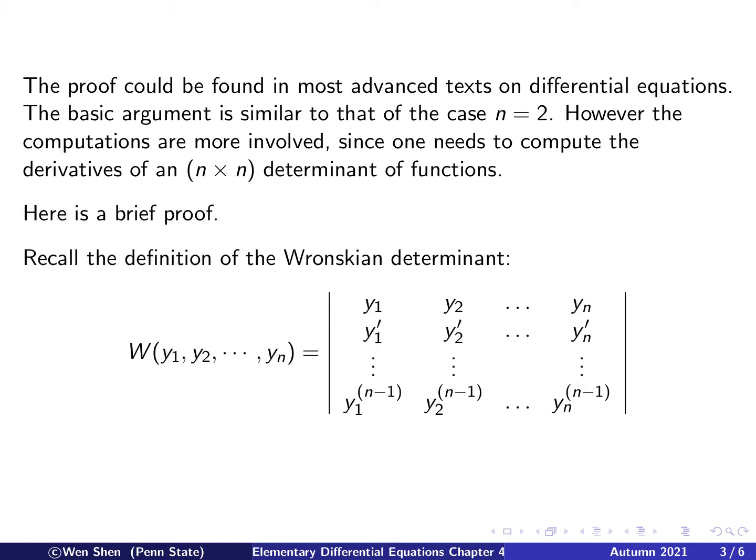Let's try to do a rather brief proof. Let's recall first the definition of the Wronskian determinant. W is the following, is the determinant of this matrix. First row is all these y's, and the second row is the derivative, and the third row is differentiate one more time, and you keep going. The nth row is the n minus 1 derivative of all the y's. So just recall that definition, because we need to differentiate this guy.